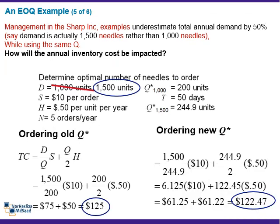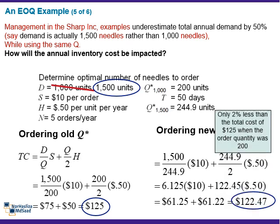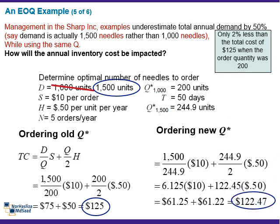However, had we known that demand was 1,500 with an EOQ of 244.9 units, we would have spent $122.47. Note that the expenditure of $125 made with a substantially wrong demand estimate is only 2 percent higher than what we would have paid had we known the actual demand. Note also that, were it not for rounding, the annual holding cost and ordering cost would be exactly equal.